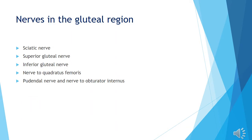This slide shows the nerves in the gluteal region: the sciatic nerve, the superior gluteal nerve, the inferior gluteal nerve, the nerve to quadratus femoris, the pudendal nerve, and the nerve to obturator internus.